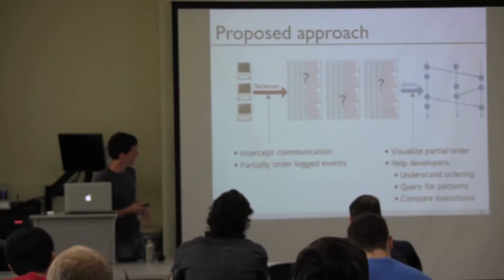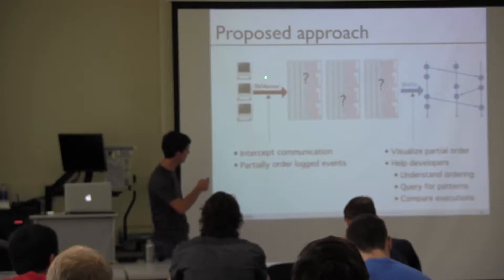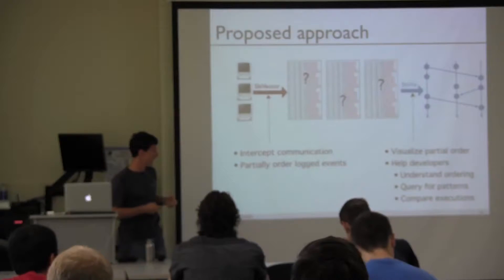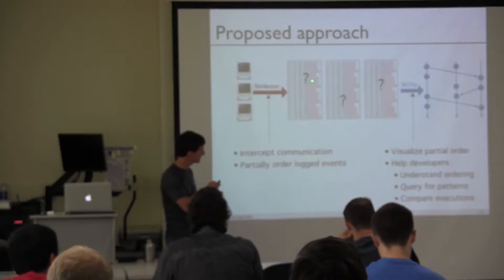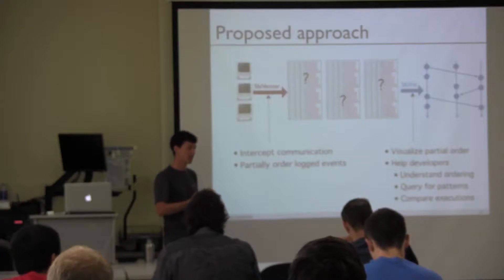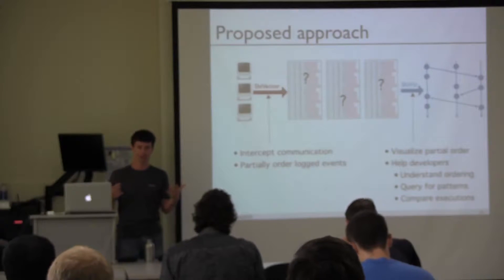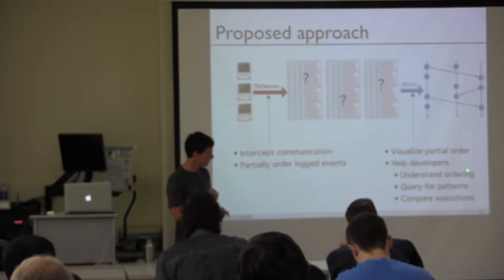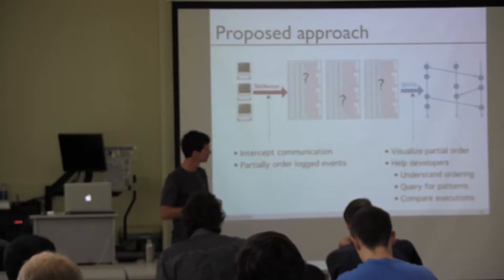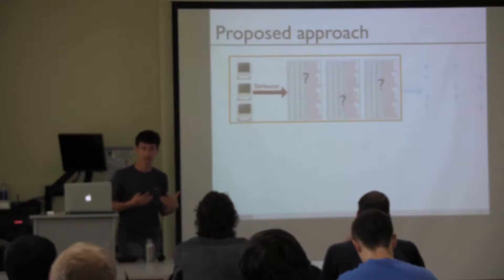The two tools — Shavector and Shaviz — change the process in the following way. Shavector intercepts communication and injects vector timestamps into the log messages, giving you a slightly different log with a little extra metadata. This metadata is used on the Shaviz side to visualize the partial order information within your system. Shaviz is aimed at solving those three challenges: helping developers understand the ordering of events, querying for patterns, and supporting comparison.